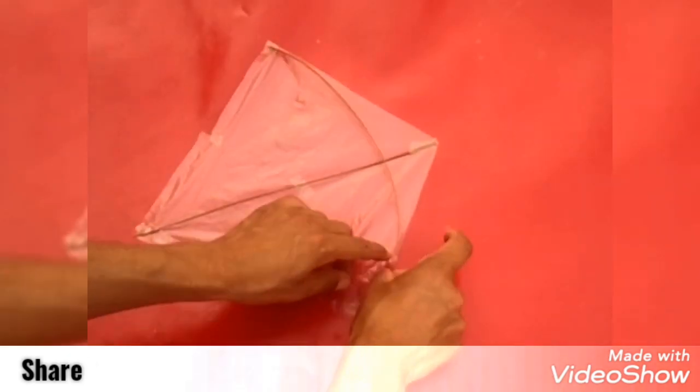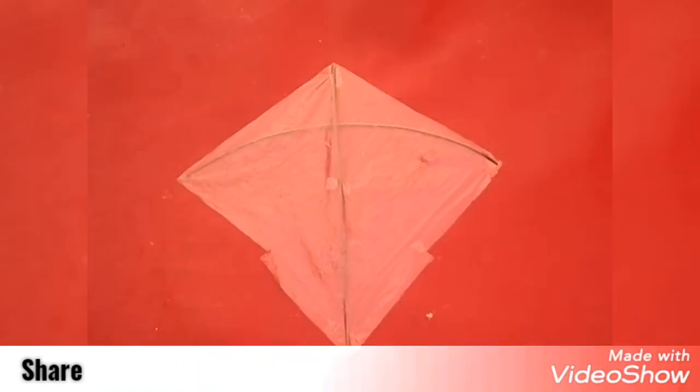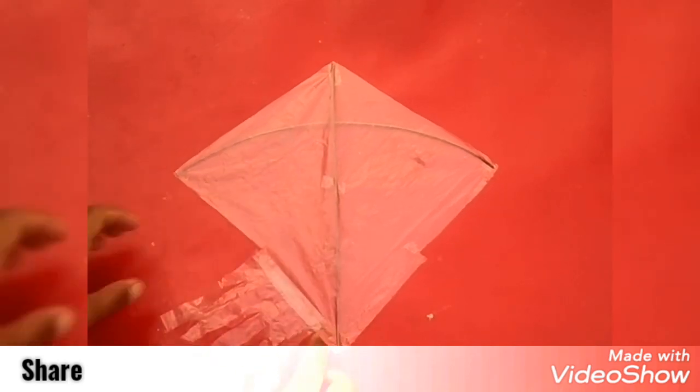And scissor and sticky tape are using for making kite. So this is simple and small kite you can see.